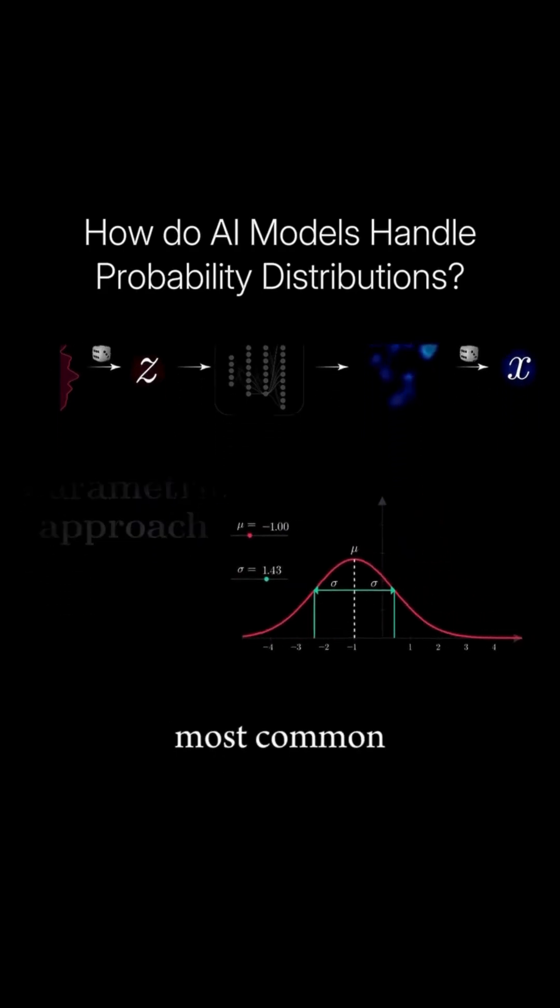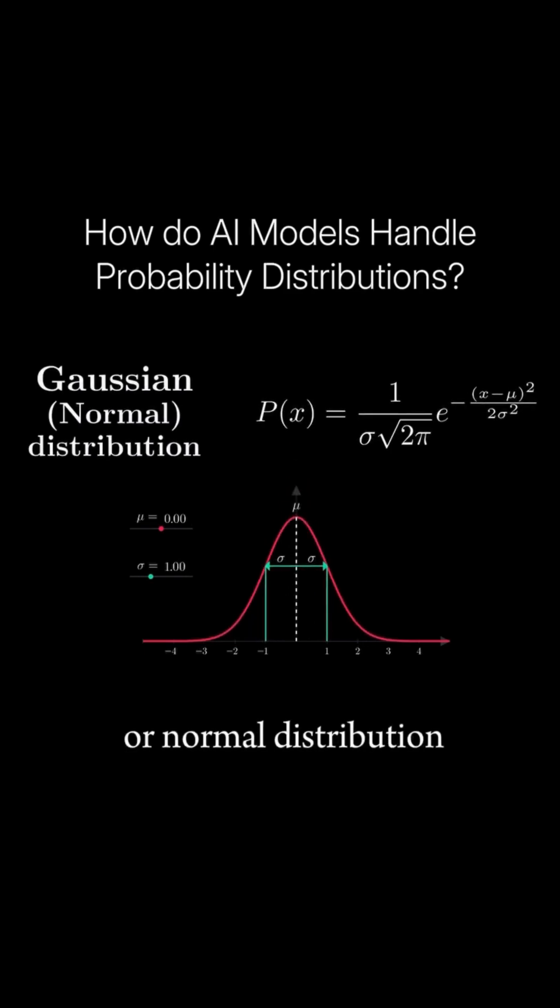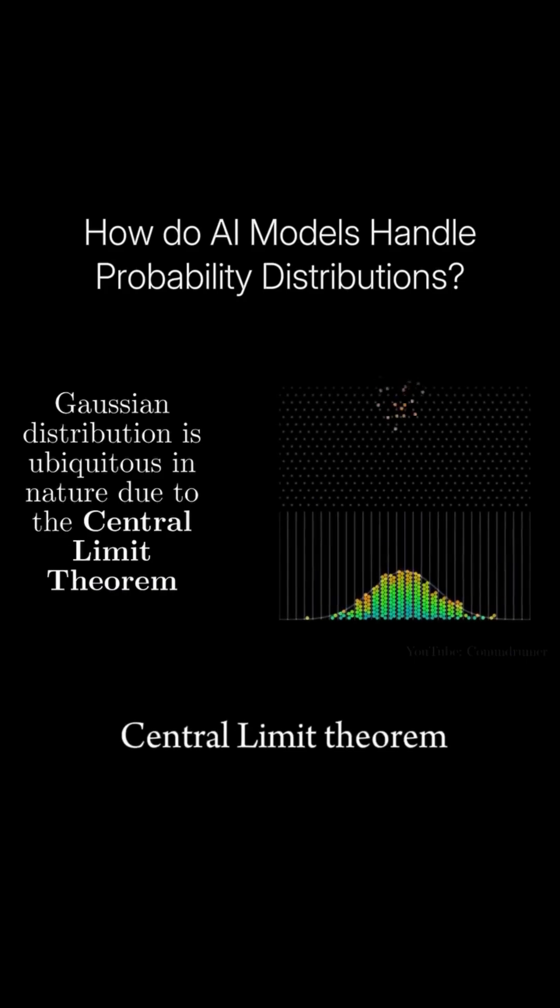By far, the most common parametrizable distribution is the Gaussian, or normal distribution, the famous bell curve. Not only is it mathematically convenient, but it is also incredibly common in nature due to the Central Limit Theorem.